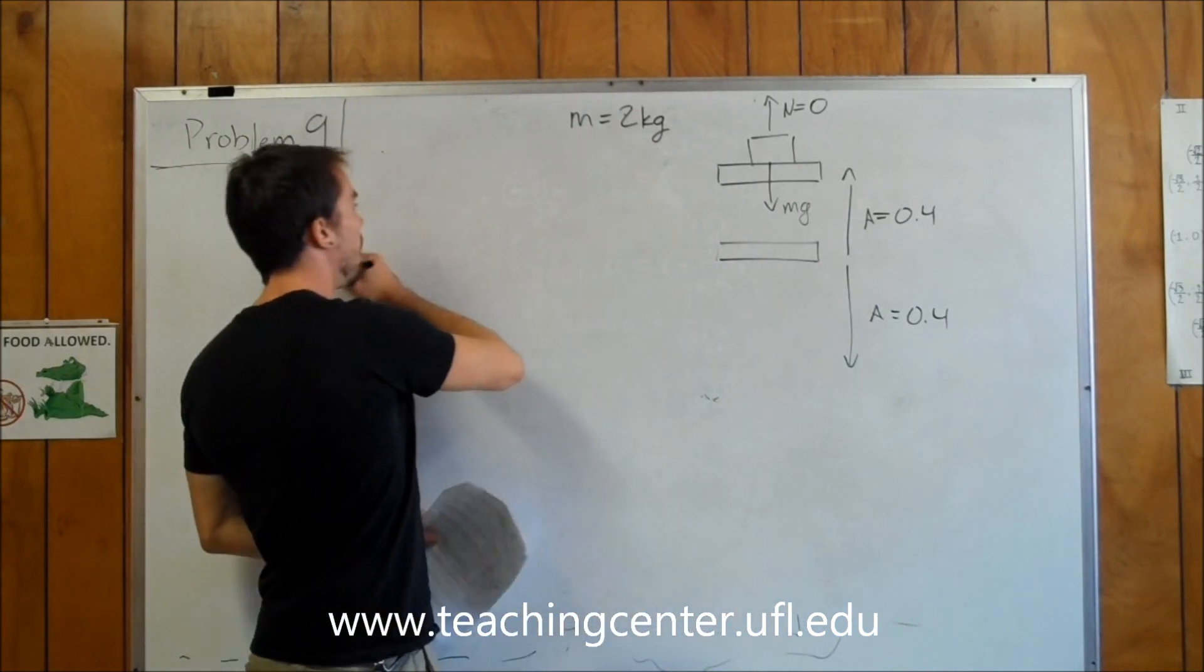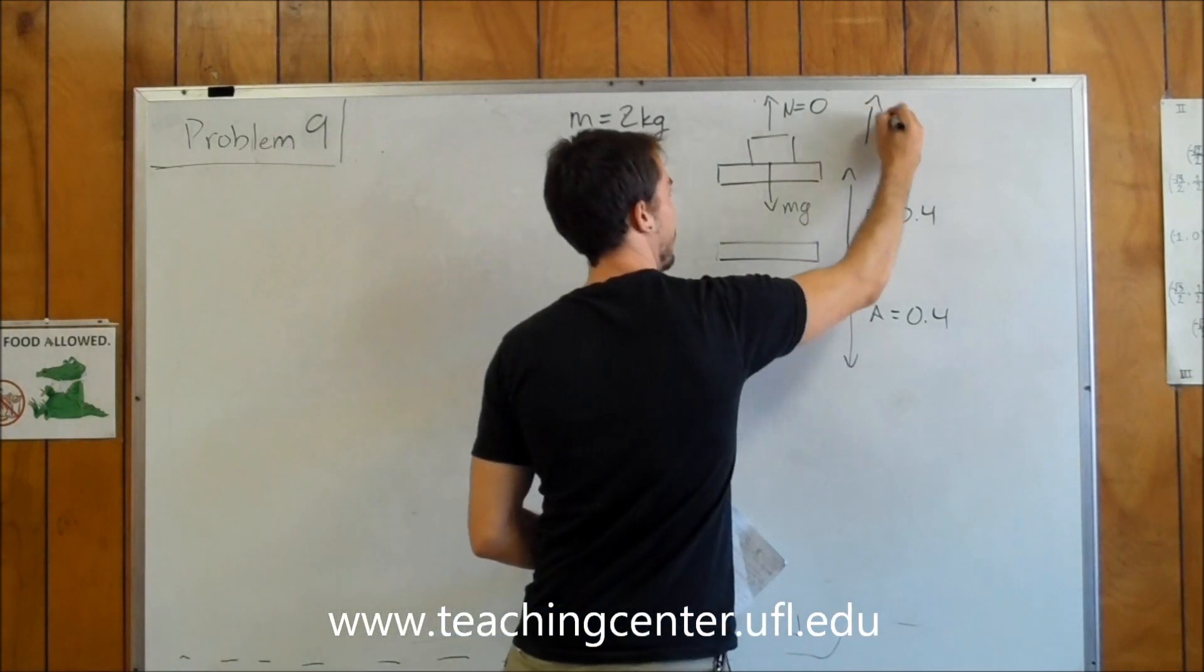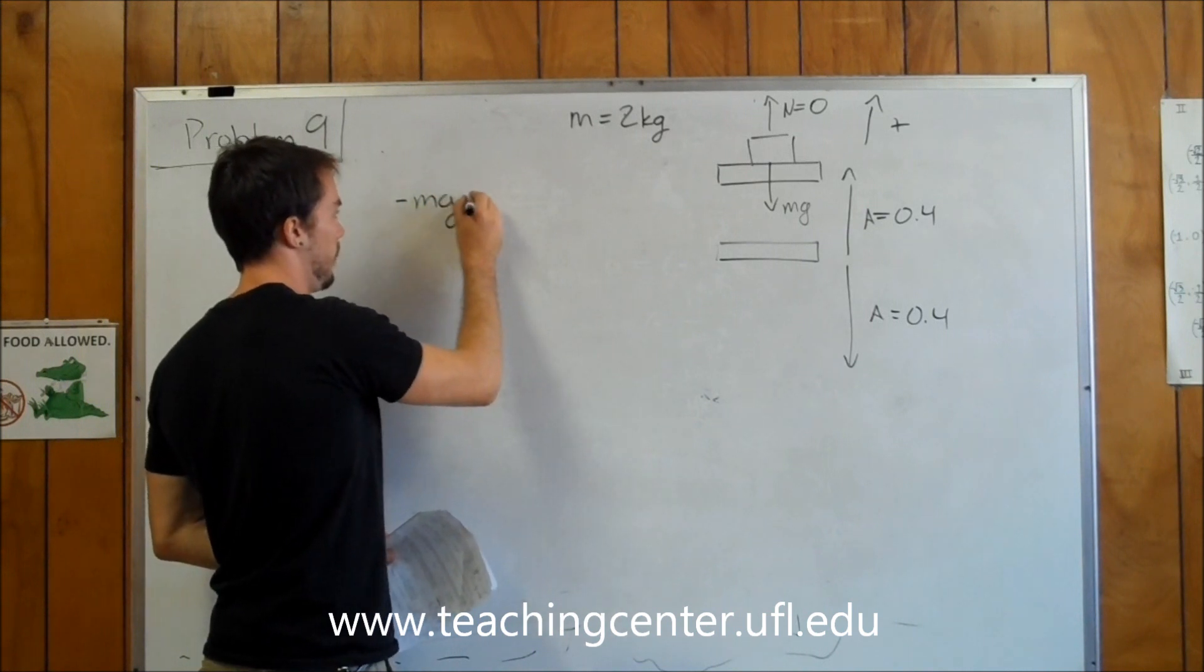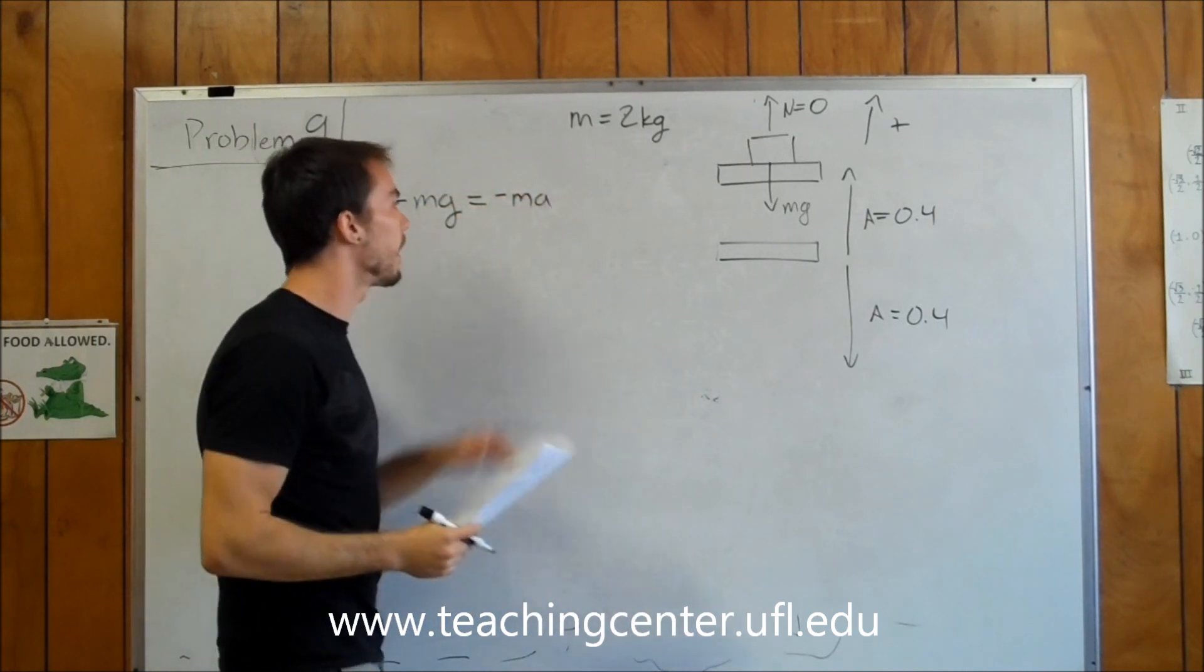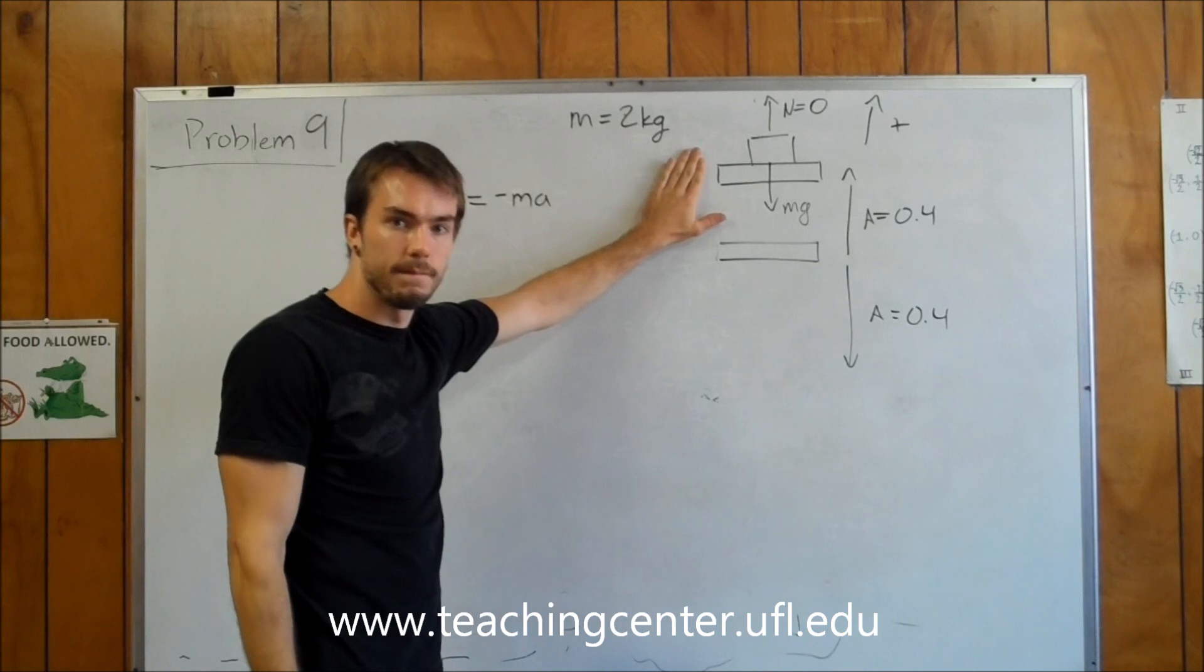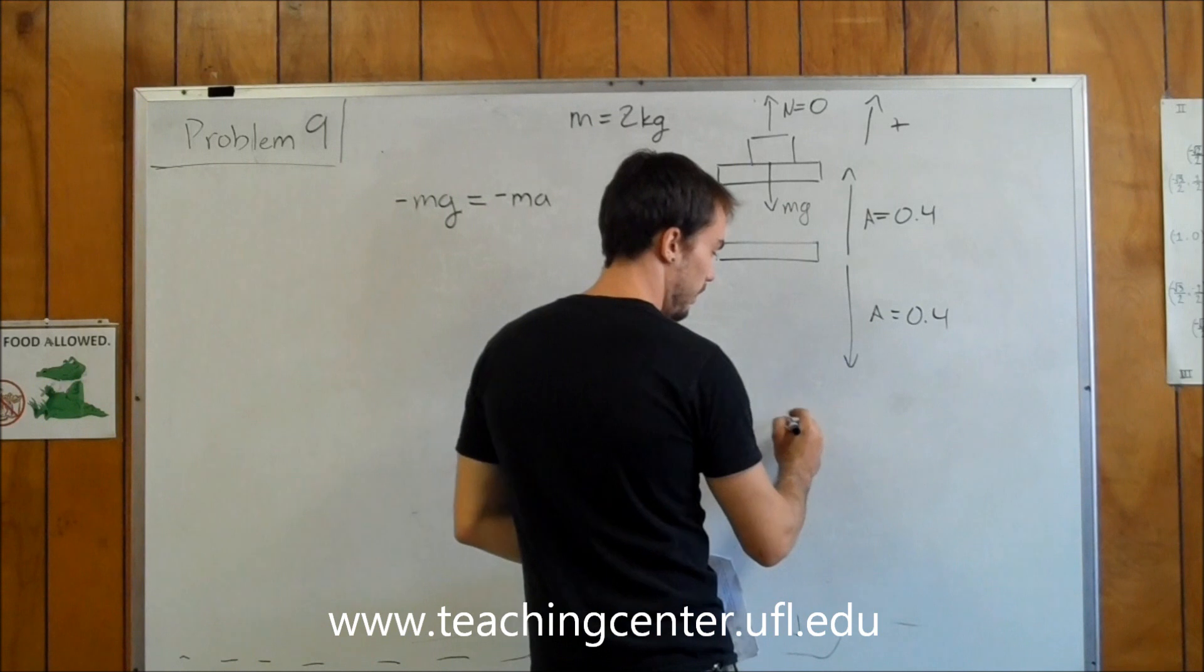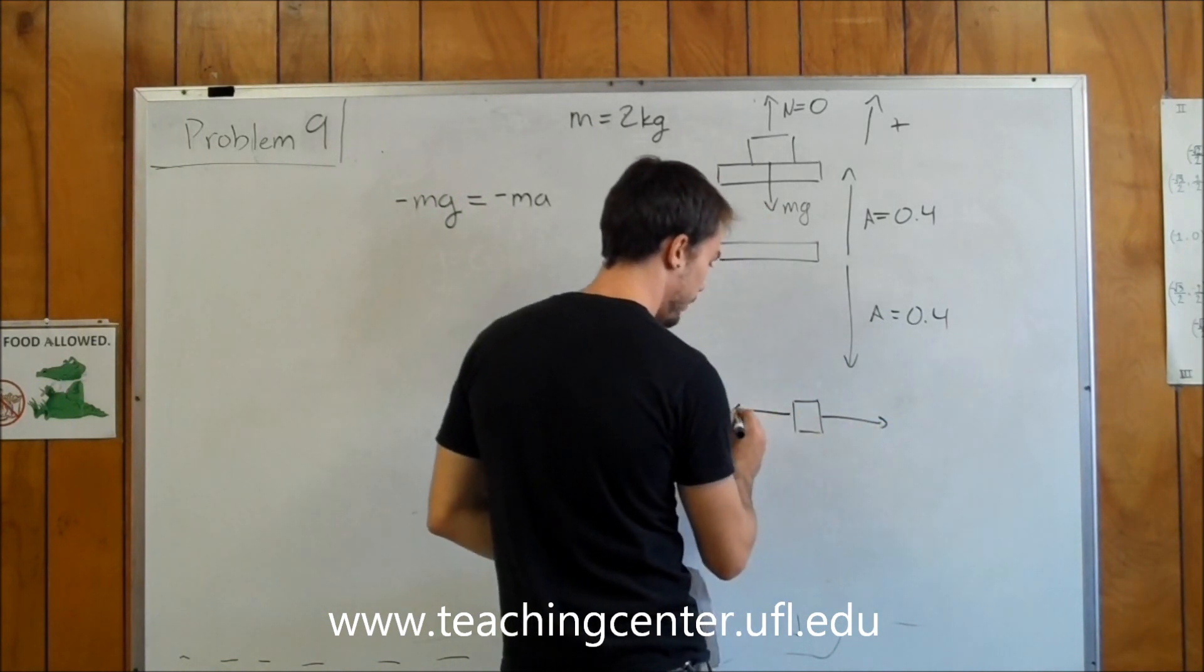So our force equation is going to state that we assume up is positive. That our negative mg is going to be equal to our negative ma. Now, I'm putting a negative there because at this point, the acceleration is downwards. You guys should remember that when you have the spring, a block attached to a spring that's going back and forth,